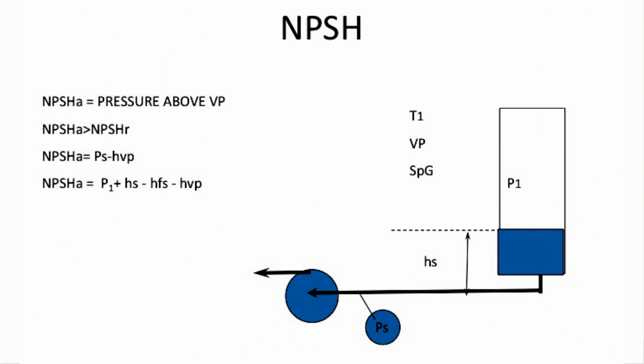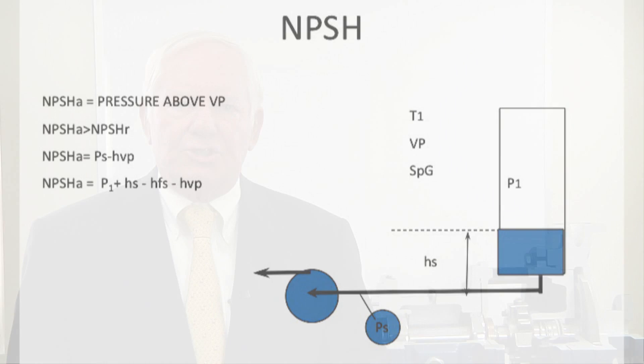For a new system being designed, you have to calculate it. You take the pressure in your suction vessel, add the static height of the liquid — or subtract it in the case of a lift — subtract the friction loss on the suction side, and then subtract the vapor pressure. Simple.